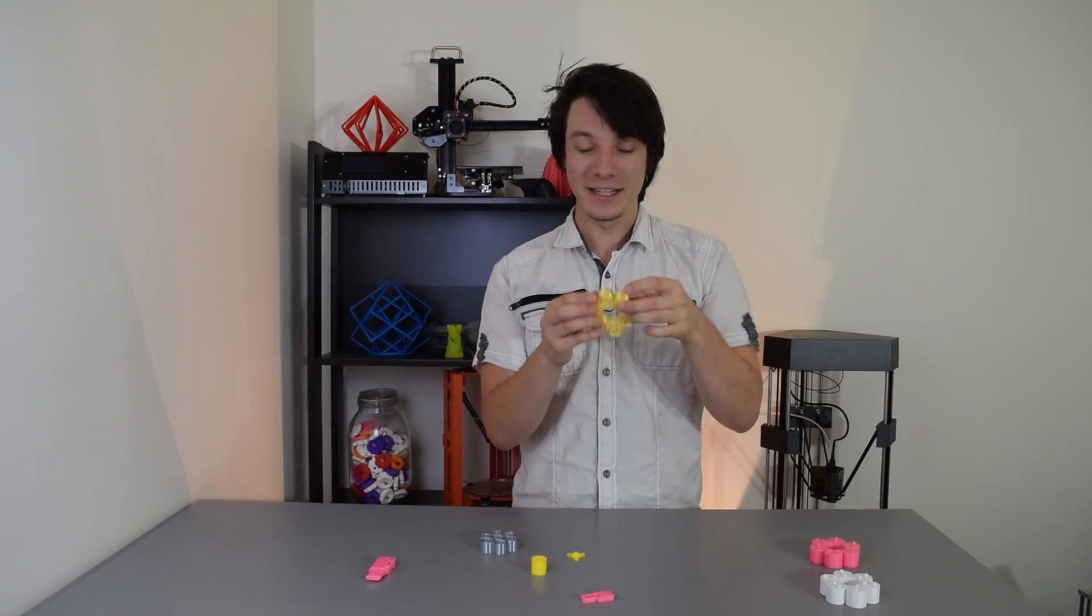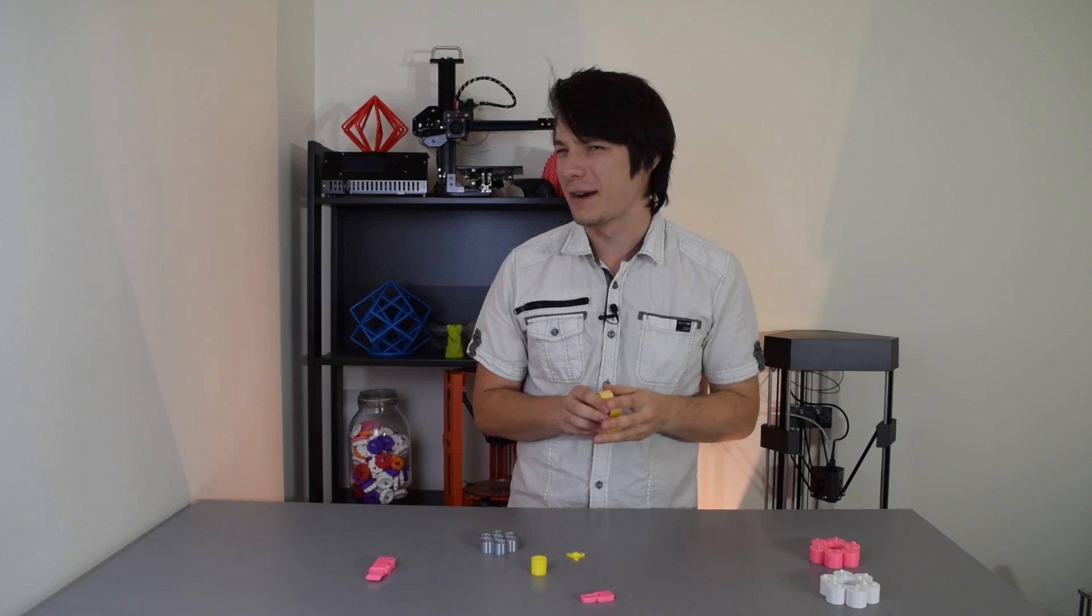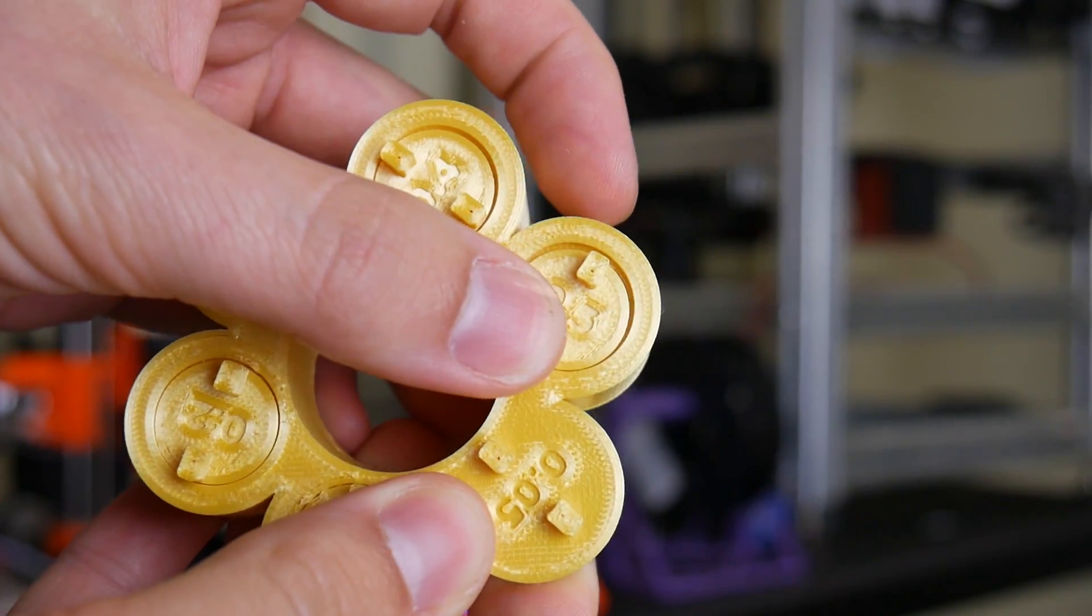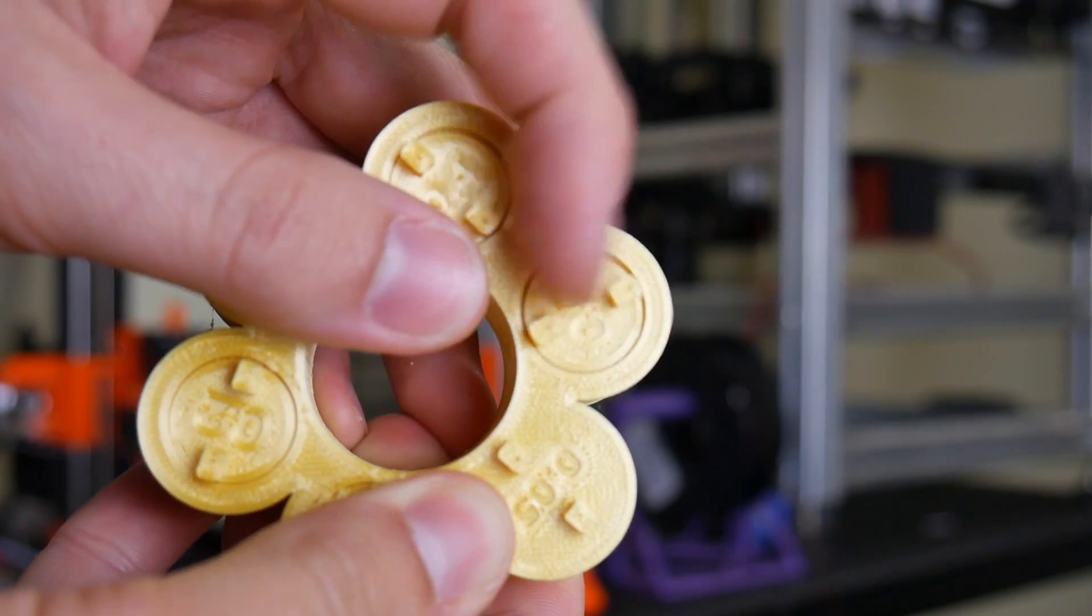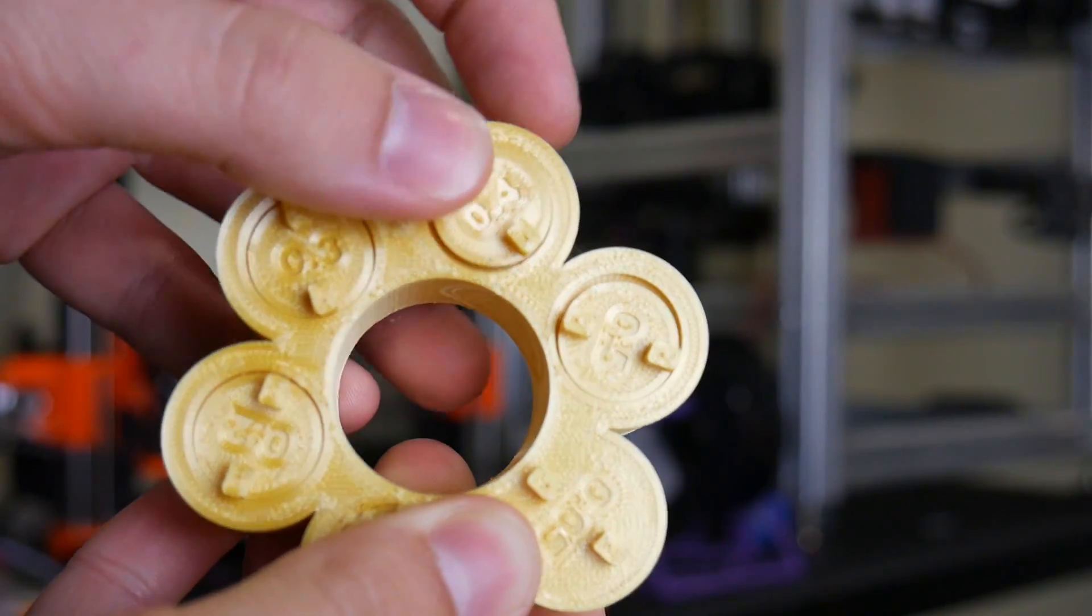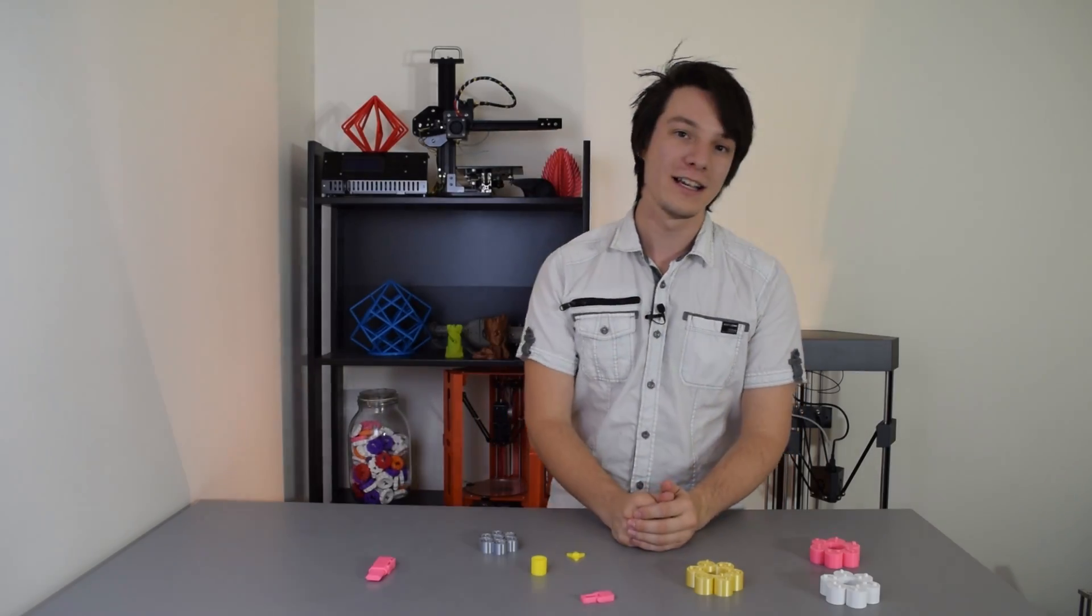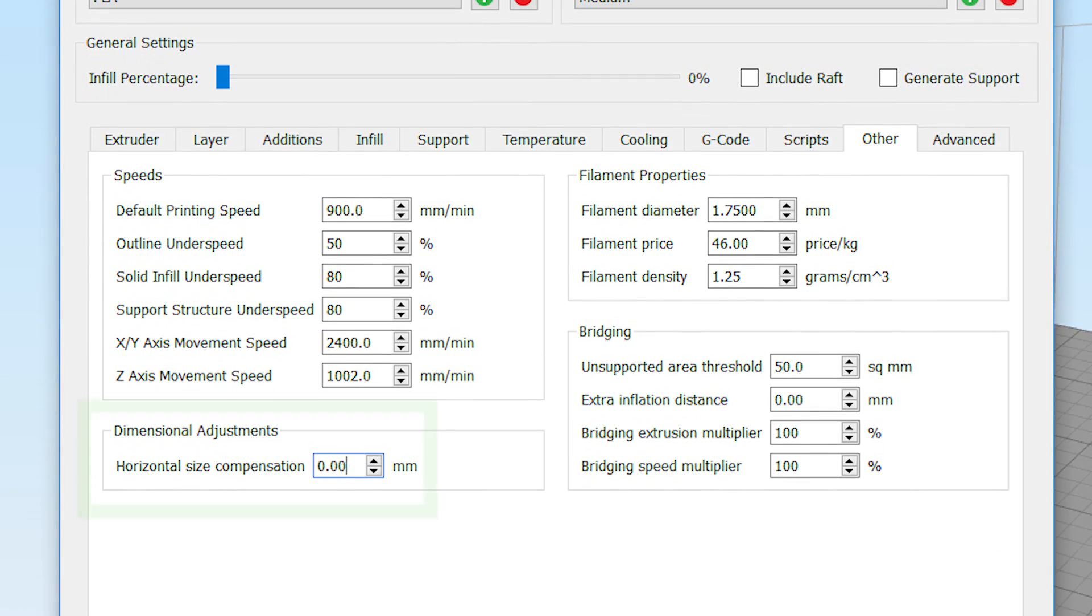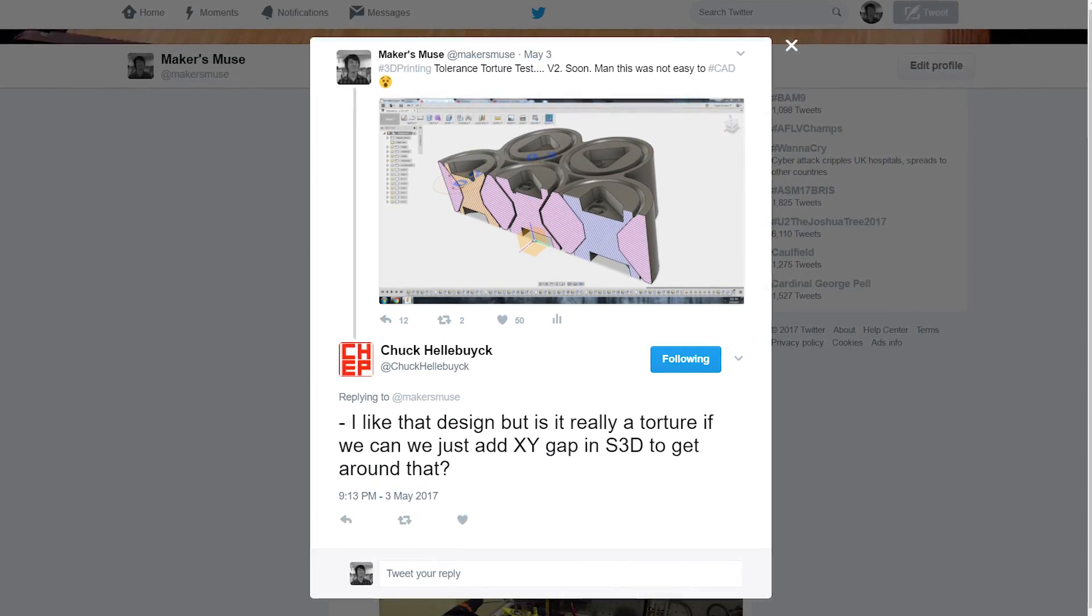So that was actually really surprising because I thought 0.2, there's no way that would work. So 0.2 all the way up to 0.5 does work. And you can actually get a really good appreciation of how different tolerances affect two models that interact together. So you could affect your slicer and alter tolerances. For example, you can change your XY compensation, which is a suggestion that Chuck did mention when I posted a teaser picture up on Twitter.